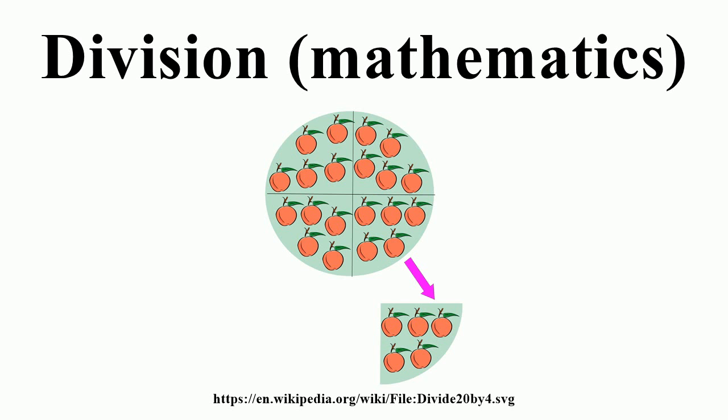More generally, division in the sense of cancellation can be done in any ring with the aforementioned cancellation properties. If such a ring is finite, then by an application of the pigeonhole principle, every non-zero element of the ring is invertible. So division by any non-zero element is possible in such a ring.